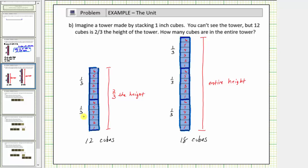Because three copies of one-third is equal to one, the entire height is equal to three copies of six cubes, shown here, giving us a total of eighteen cubes in the entire tower. I hope you found this helpful.